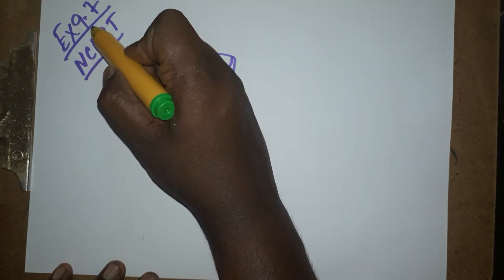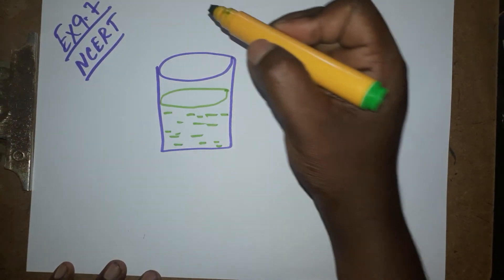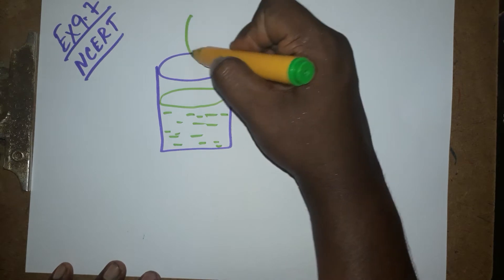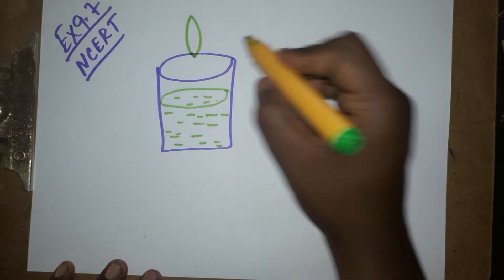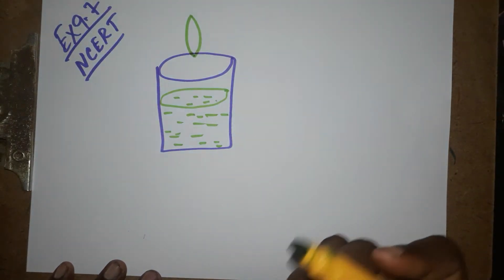Today we are going to learn NCERT example 9.7. It is a physics problem for class 12. When I drop a glass lens inside a liquid, the lens is getting disappeared.